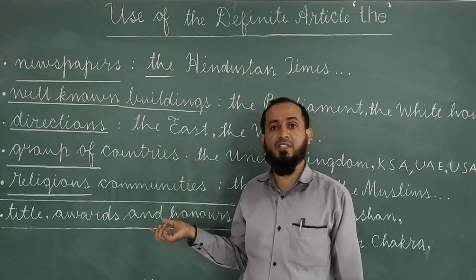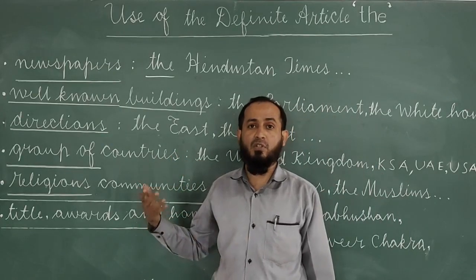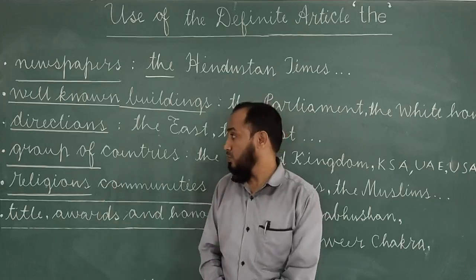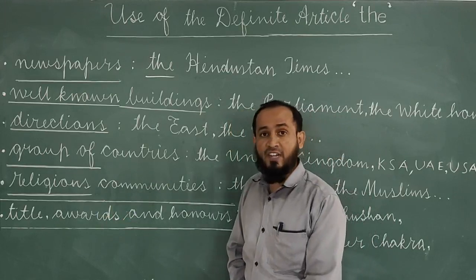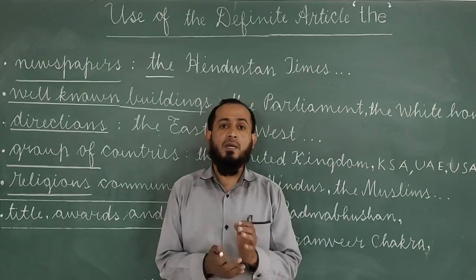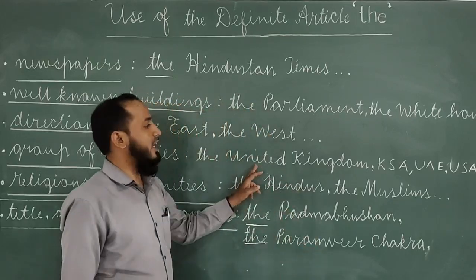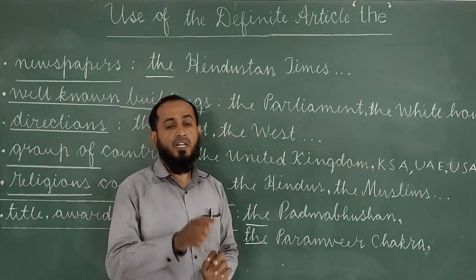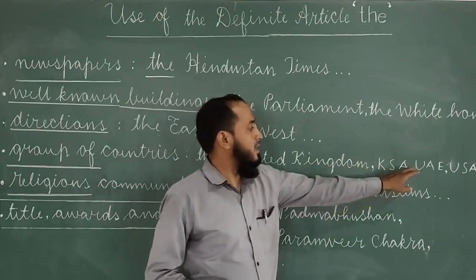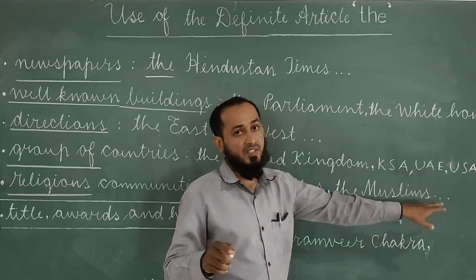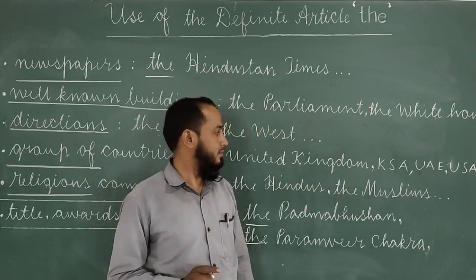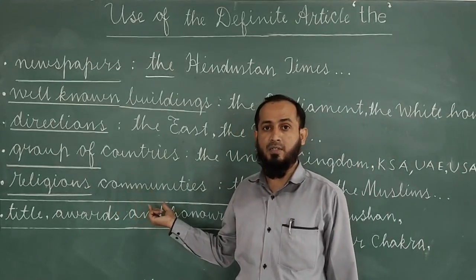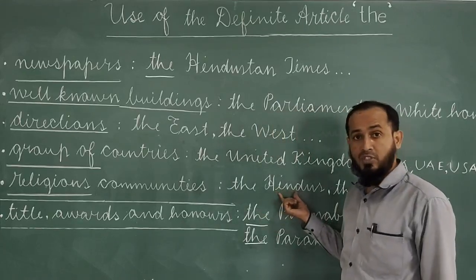Next: 'the' is used before directions — east, west, north, south. For example: the East, the West, the South, the North. Also, 'the' is used before groups of countries or certain countries. For example: the United Kingdom (UK), the Kingdom of Saudi Arabia (KSA), the United Arab Emirates, the United States of America (USA).